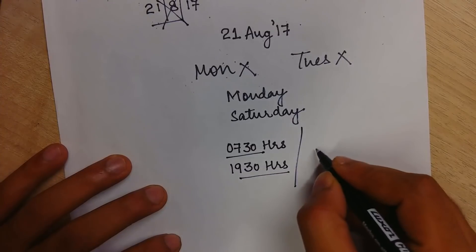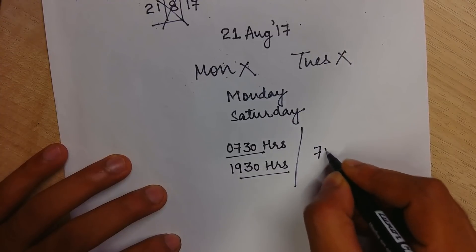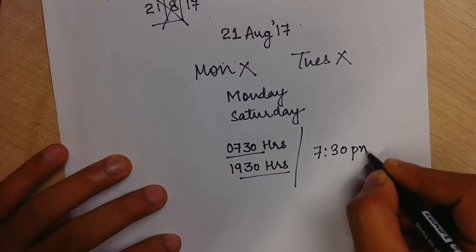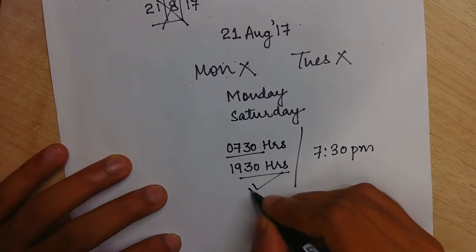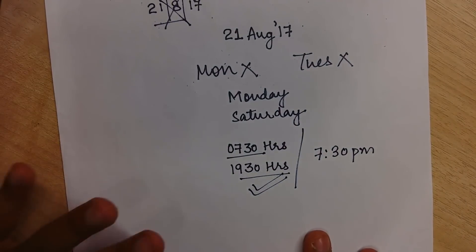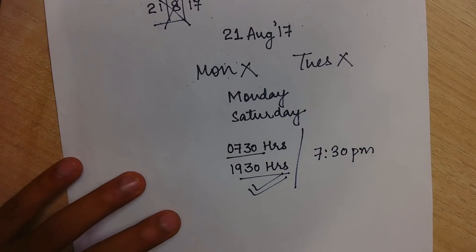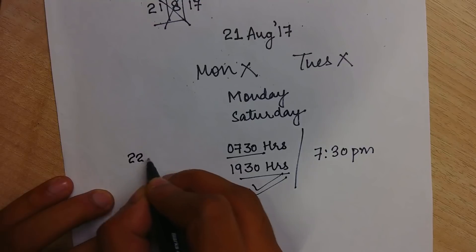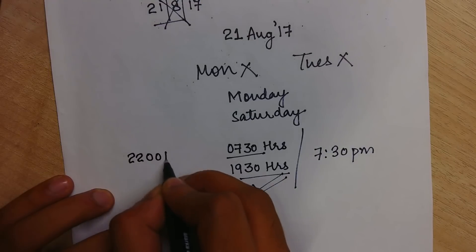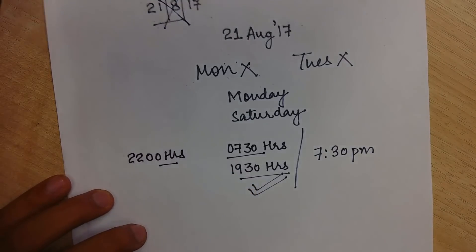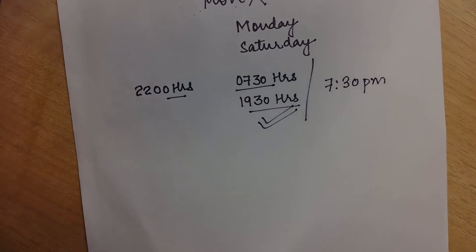For the time, for example 7:30 hours — but this is more correct according to English — you can write it as 2200 hours. This is your time format. Then you have to write Dear Diary.